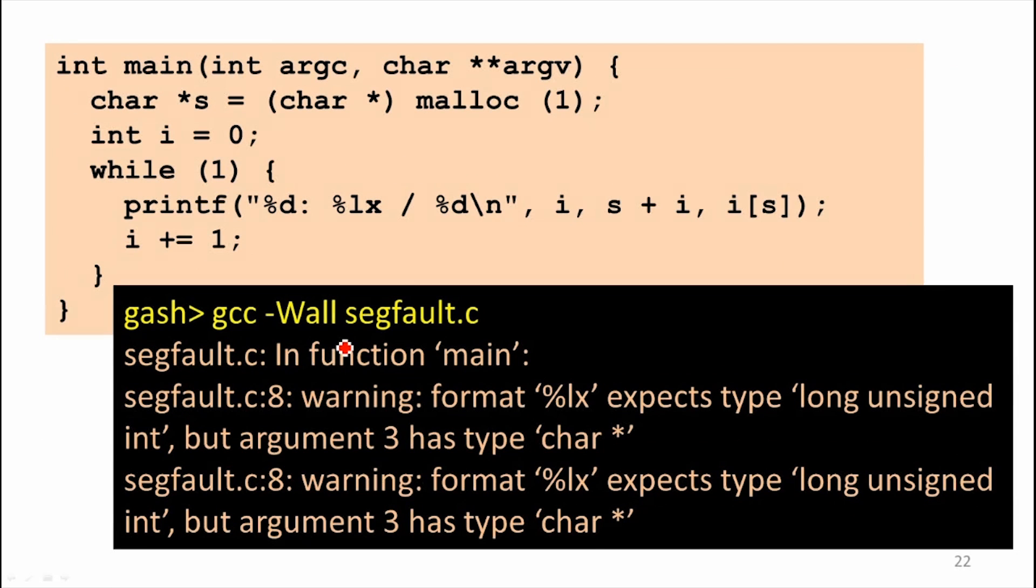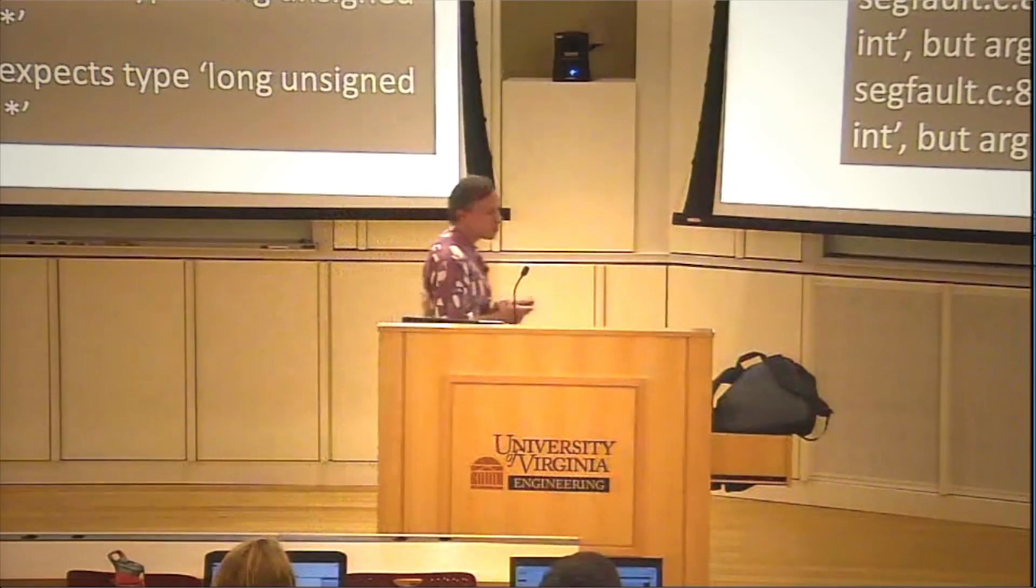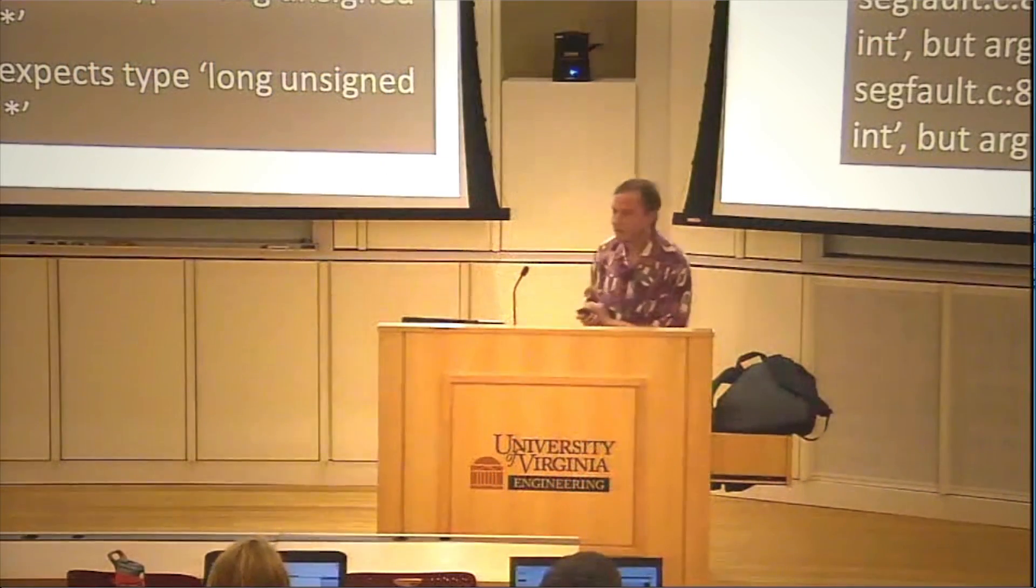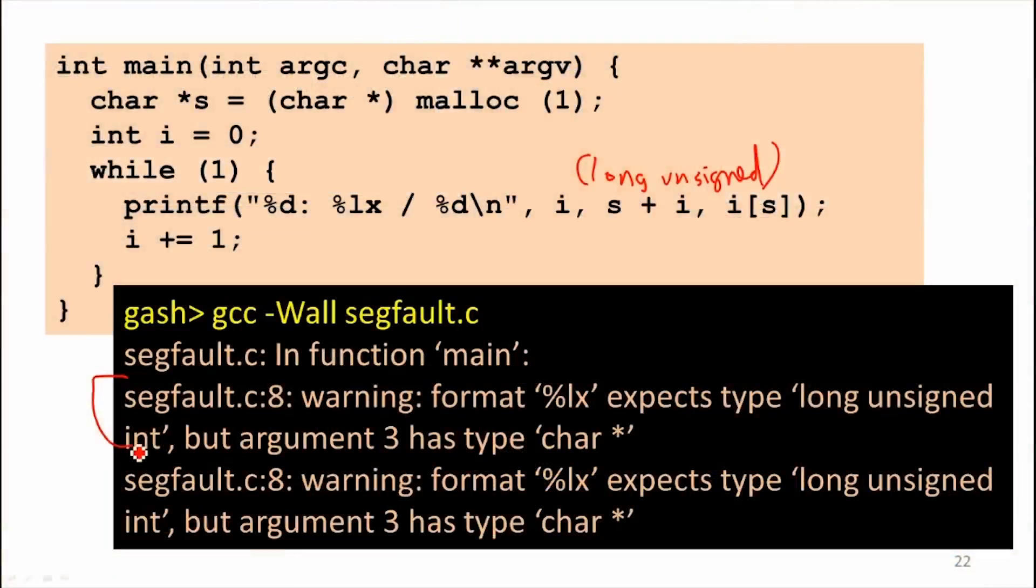And if we run it, first of all, we compile it. With the warnings, it gives us a type error because we didn't have the cast to unsigned here. To make up for being critical of the Rust compiler for having a redundant error message, I'm showing you the one from GCC, which has been around for about 30 years. It gives you the same message twice. We're going to get a seg fault. When do we think we're going to get it?